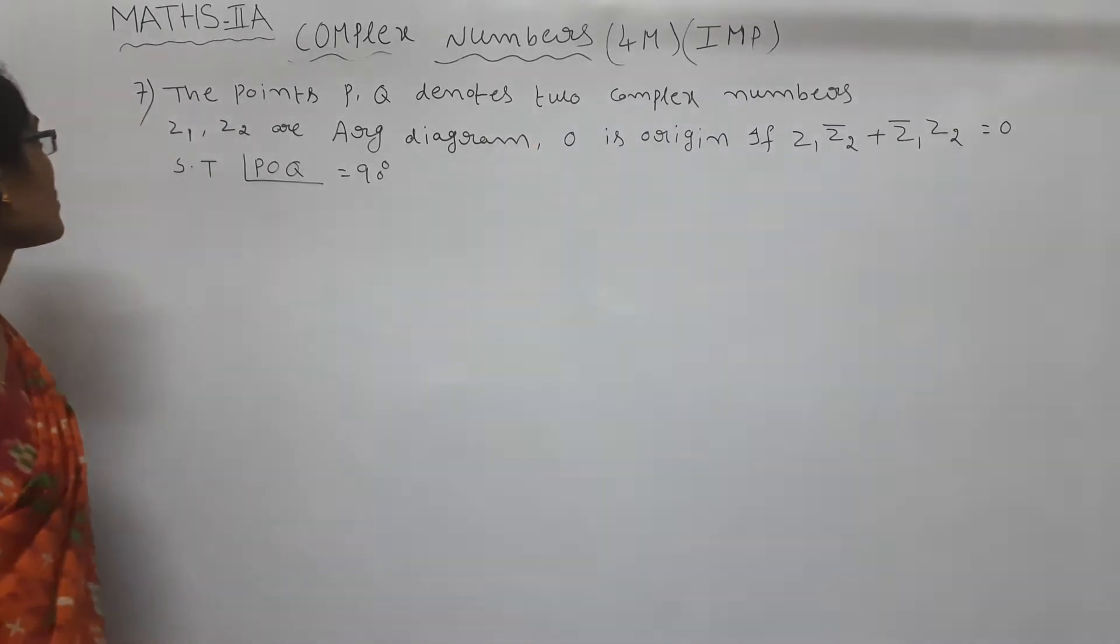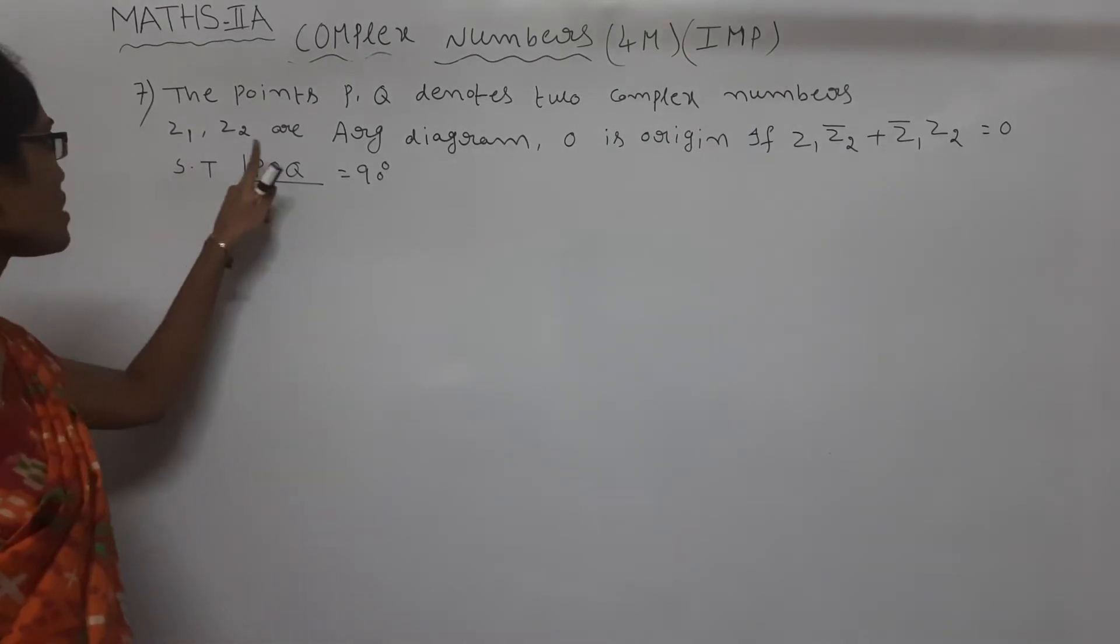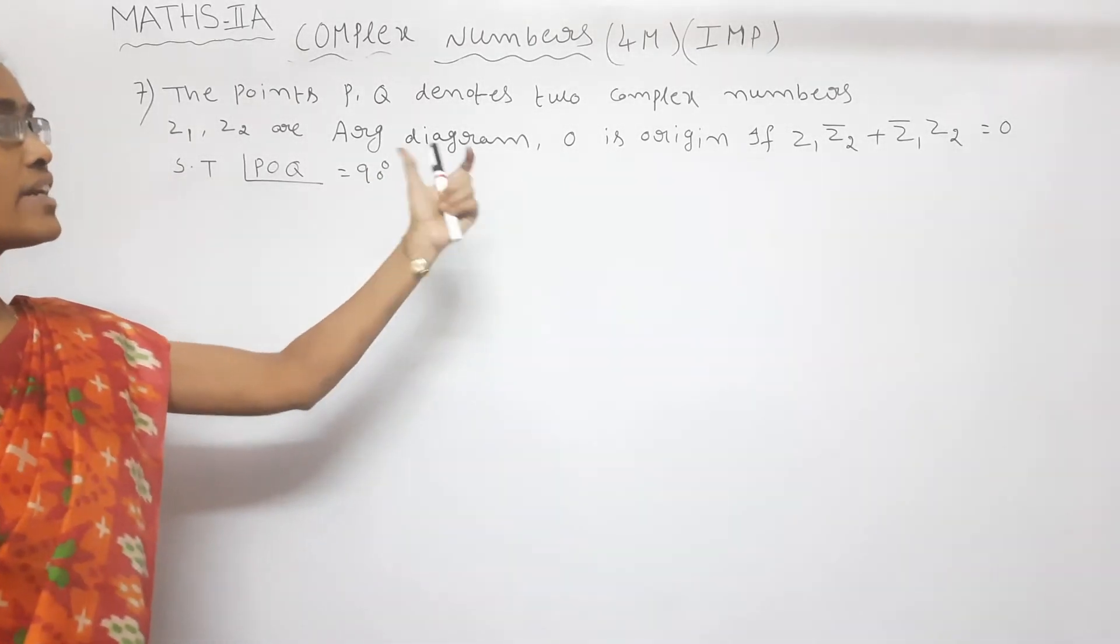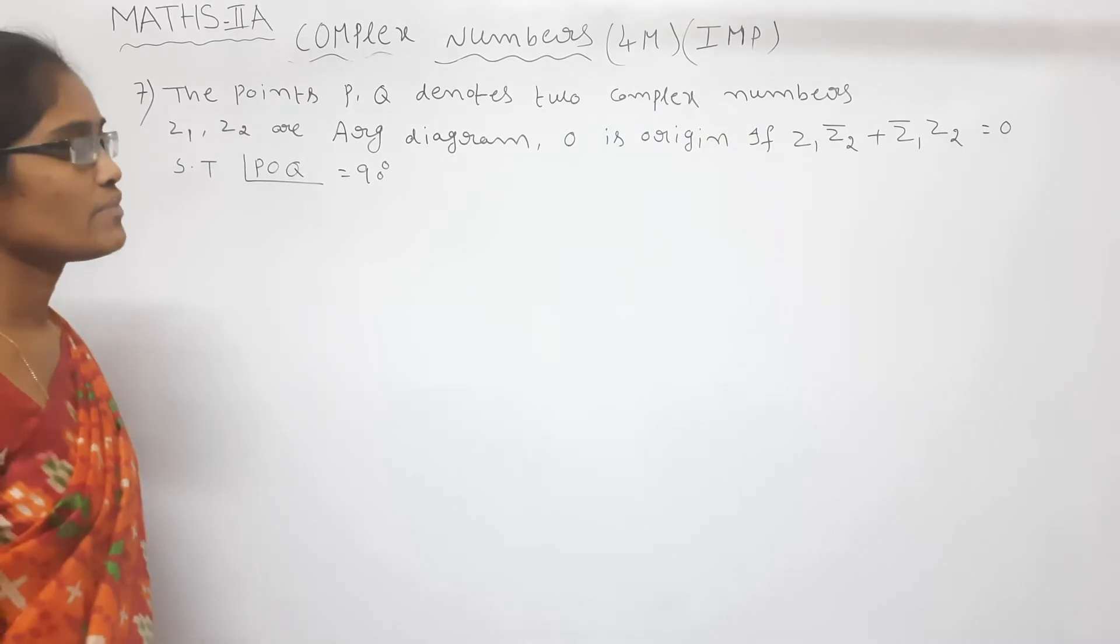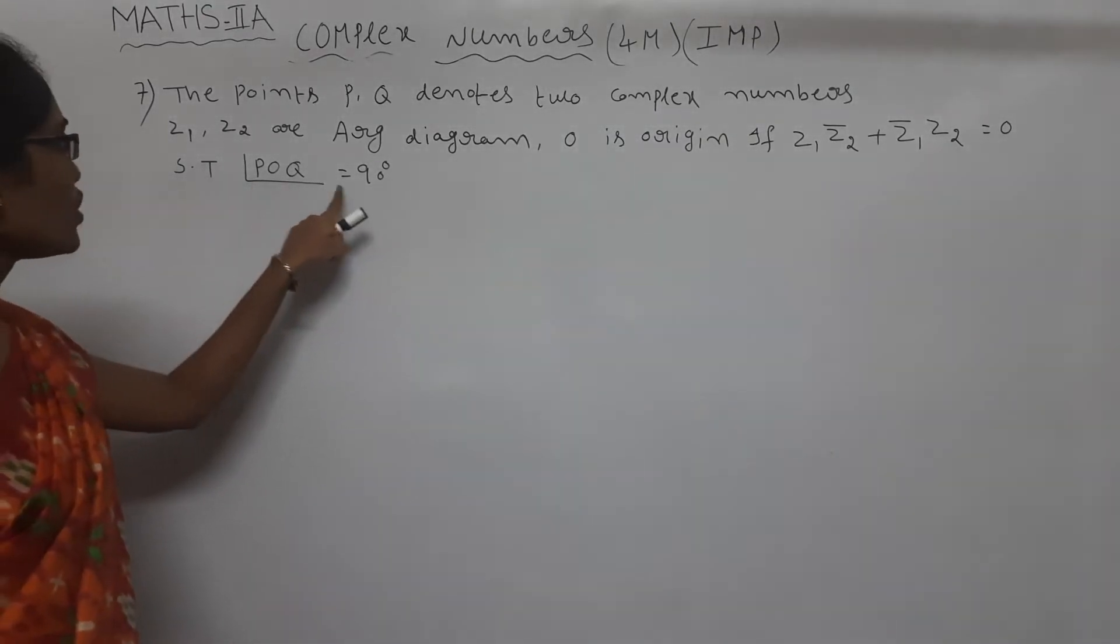Next to see the question. The points P and Q denote two complex numbers Z1 and Z2 on an Argand diagram. O is the origin. If given the condition Z1 into Z2 bar plus Z1 bar into Z2 is equal to zero,